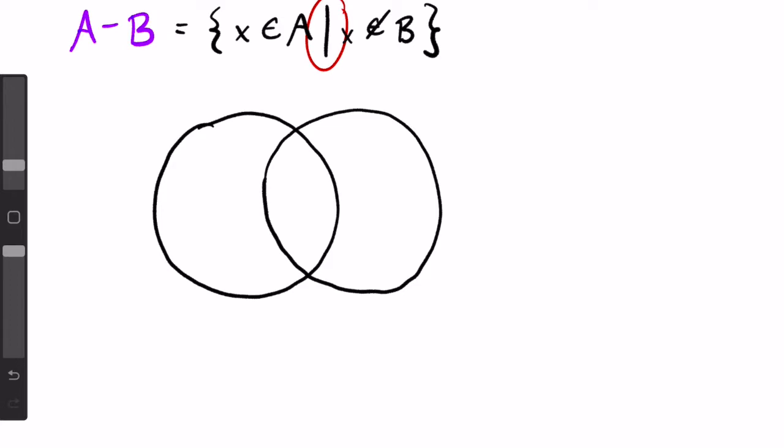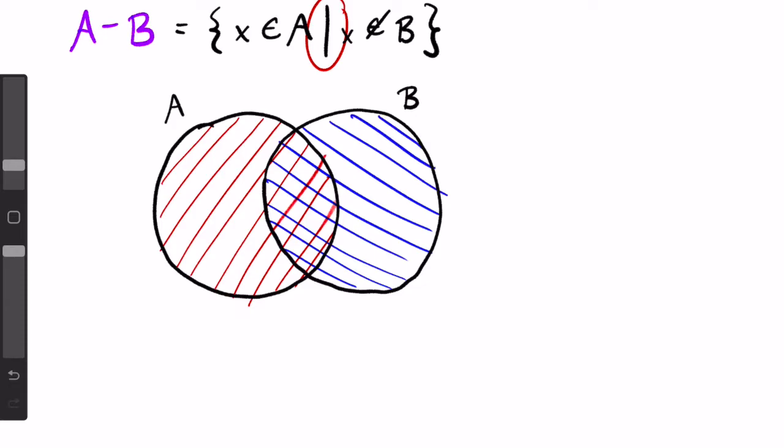For a brief refresher, a Venn diagram is a sort of Olympic ring situation where each circle is a different set. So let's say this left circle is A and this right circle is B. Anything inside the left circle is in the set A and anything inside the right circle is in the set B.